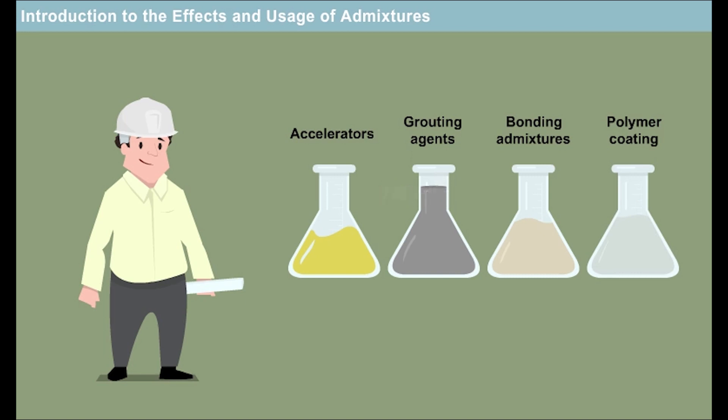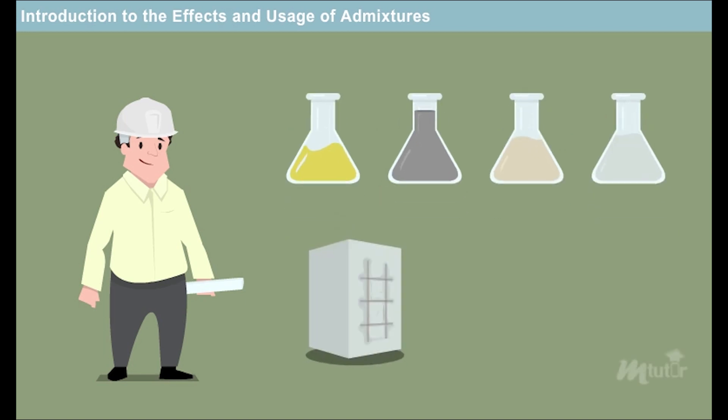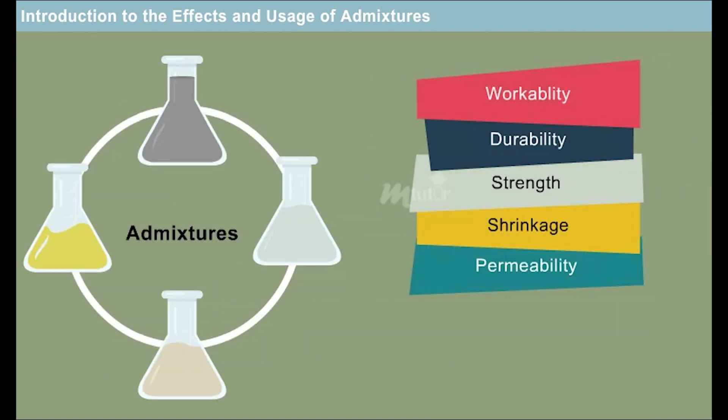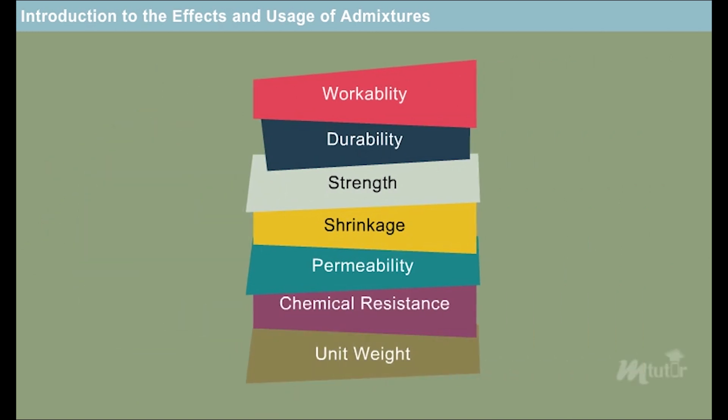Since there are different types of admixtures, you would probably make use of accelerators, grouting agents, bonding admixtures, and polymer coating for the assigned task. These admixtures are suitable for localized patching works, gravity filling, and for sealing the cracks of the old building. Different admixtures have different effects on concrete and hence its usage is based on the work it is required for.